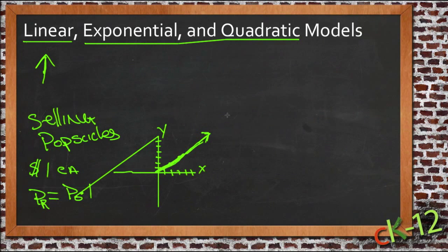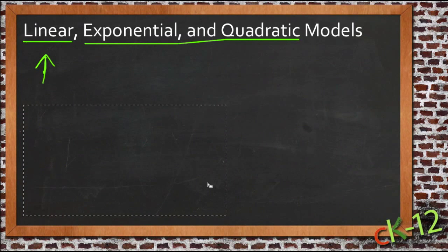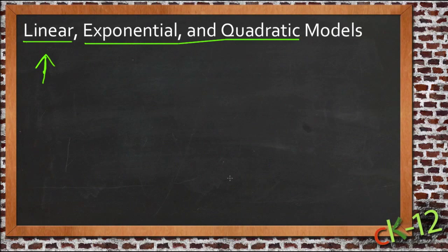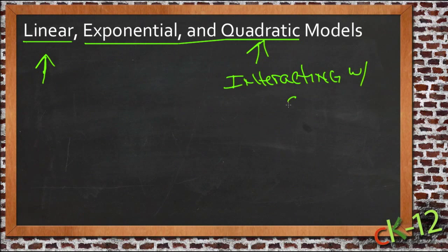Now if we have a quadratic function, a quadratic function is something where one value goes up by the square of the other value. And a very common example of a quadratic function then might be something that's thrown or something that's falling, something that's interacting with gravity.